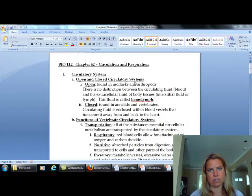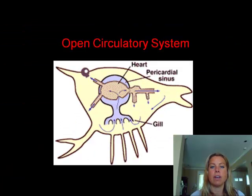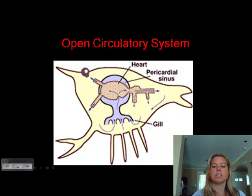There are open and closed circulatory systems. Let's review what that means. Here we've got a picture of an open circulatory system. You can notice that there is a heart and there are some vessels, but then it just dumps that blood out into the sinus of the organism.